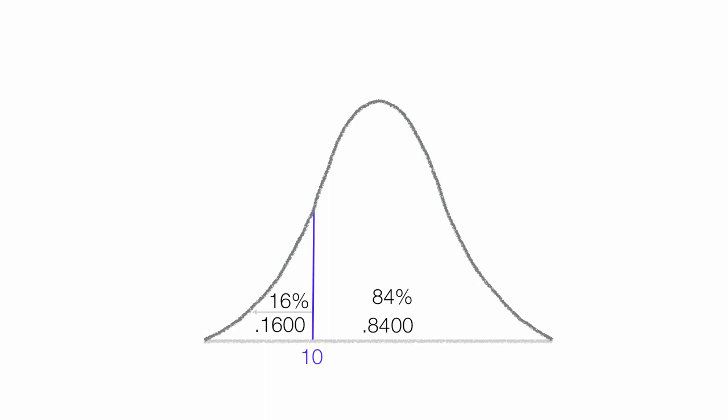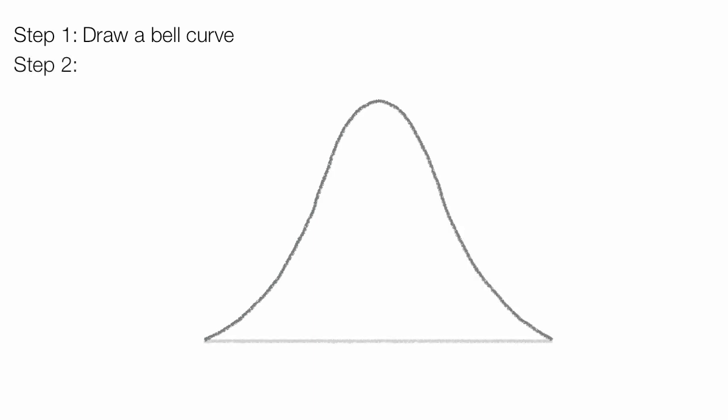Let me summarize for you and walk through the steps that I did. Step 1 is draw a bell curve. This is very useful, so I'll draw that in there. Step 2, put in the mean value, in our case it was 15 right in the middle.